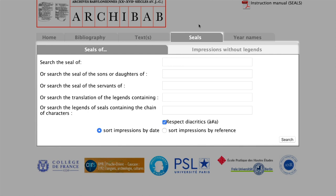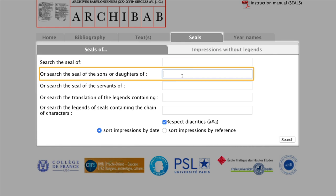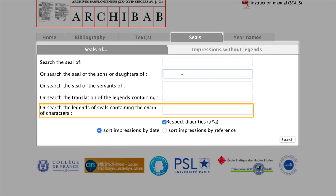Under Seals, you can enter various data to search the seal legends — for example, by seal owner, by his patronym, or even individual signs from a seal legend.